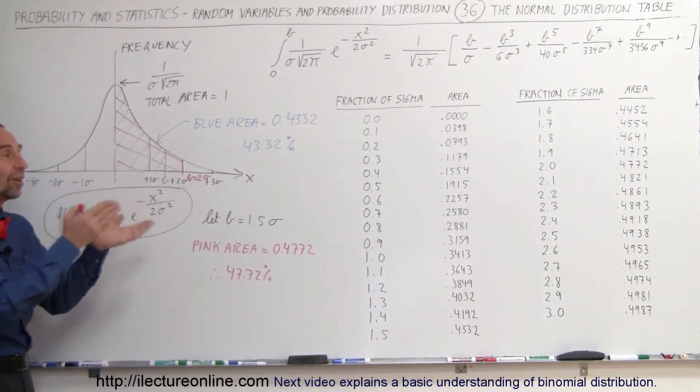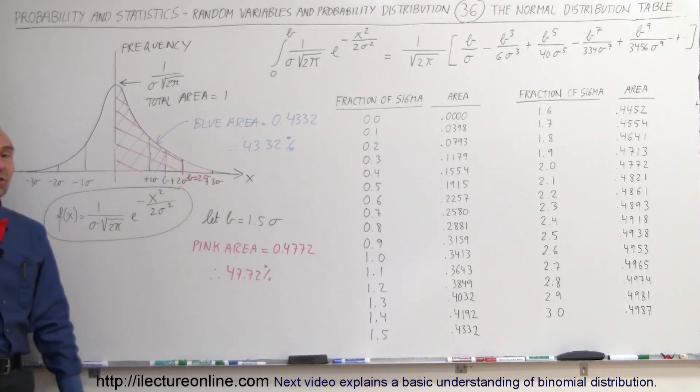And that's where we find the value using the table of a normalized distribution function, I should call it. And that's how we do that.